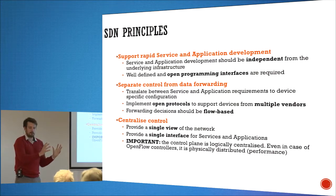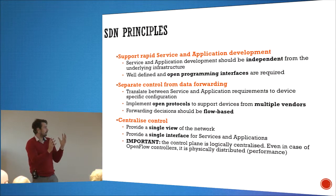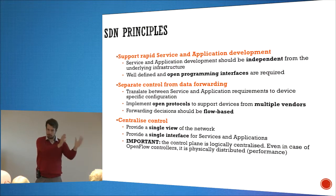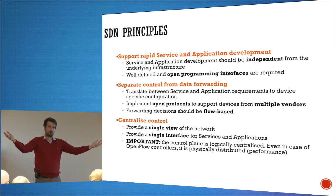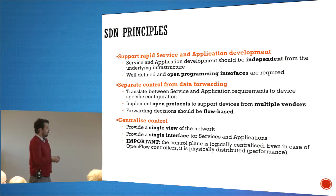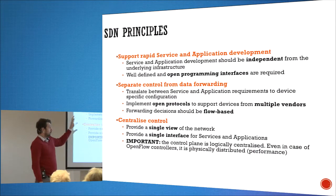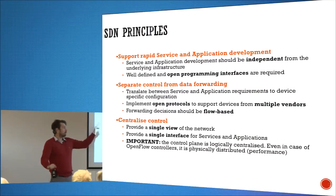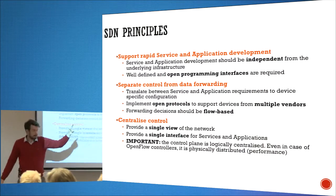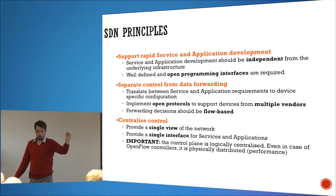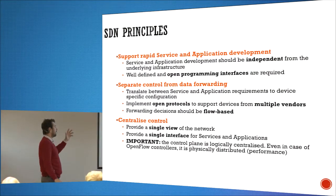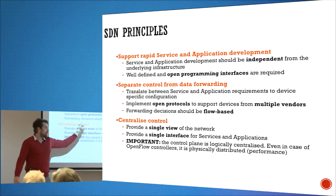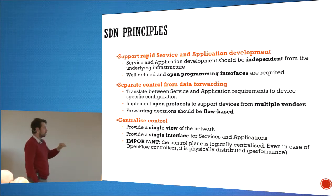Where is the control plane? It's separate. But how? Is it physically centralized? Is it logically centralized? Will there be one OpenFlow controller or many of them? What are the implications? The idea is that the control plane, whatever it is, translates between the service or application layer and the actual physical hardware, using open protocols supporting multiple vendors. Although some define that all forwarding decisions need to be made based on network flows — I'm not so sure about that one.